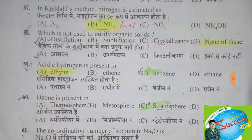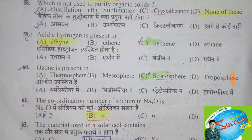Which is not used to purify organic solids? The correct answer is option D, none of these — all the mentioned processes are used to purify organic solids. Acidic hydrogen is present in — the correct answer is option A, ethylene. Ozone is present in — the correct answer is option C, the stratosphere.